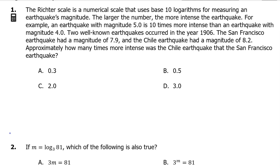Two well-known earthquakes occurred in the year 1906. The San Francisco earthquake had a magnitude of 7.9 and the Chile earthquake had a magnitude of 8.2. Approximately how many times more intense was the Chile earthquake than the San Francisco earthquake?